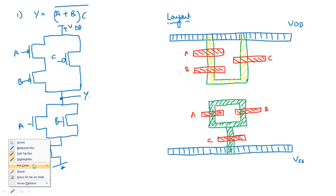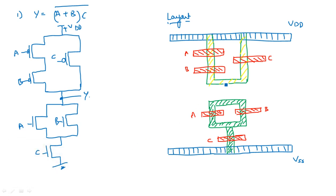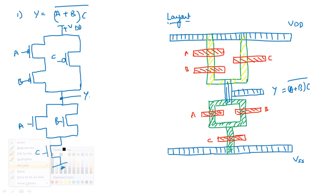Now take blue color to interconnect these two and extend the same to get the output. Vertically, the output line is Y equal to A plus B into C whole bar. Contact is represented with black color — take a black box wherever you have different connections.